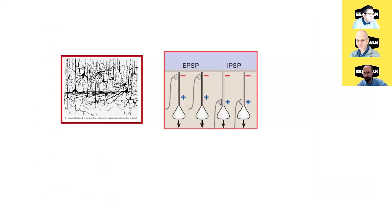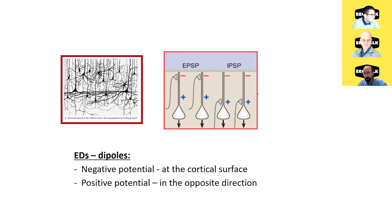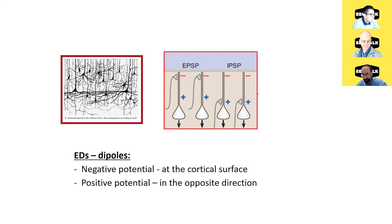For epileptiform discharges they have a specific distribution of poles: negativity is always towards the surface of the cortex, and the return current — the positive polarity — is always in the opposite direction, towards the white matter, so deeper.